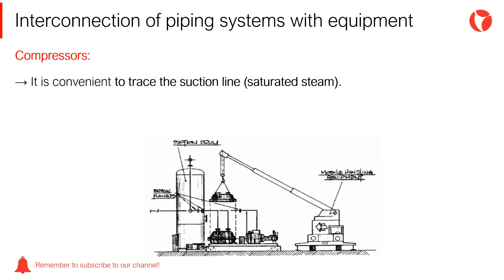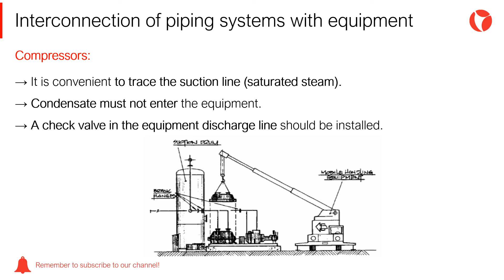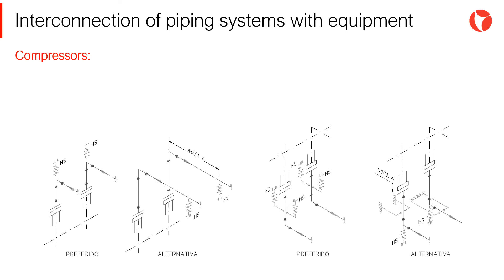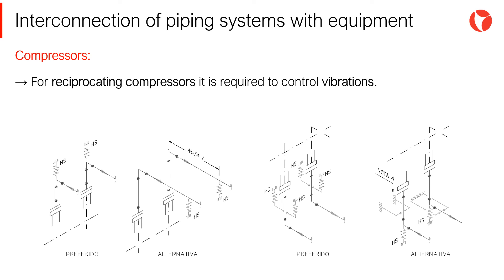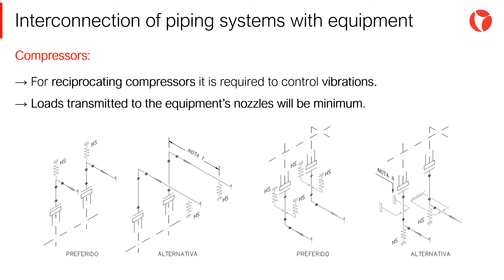It is convenient to trace the suction line of the equipment with saturated steam. Condensates must not enter the equipment. A check valve in the equipment discharge line should be installed. For reciprocating compressors, it is required to control vibrations, and loads transmitted to the equipment nozzles must be minimum.